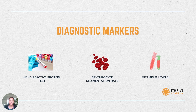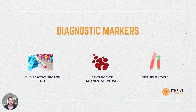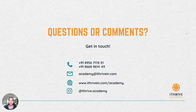The third and last biomarker for inflammation is vitamin D. Vitamin D is a fat-soluble vitamin with anti-inflammatory properties. 25-OH vitamin D, that is total vitamin D, is the best indicator for vitamin D status in your body and thereby an indicator of inflammation.